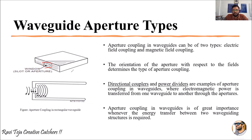The aperture coupling in the waveguide can be of two types: electric field coupling and magnetic field coupling. The orientation of the aperture with respect to these fields determines the type of aperture coupling. Based on whether the small cuts, windows, or slots are on the top, bottom, or sides of the waveguide, the respective field — electric or magnetic — will determine the type of aperture coupling.